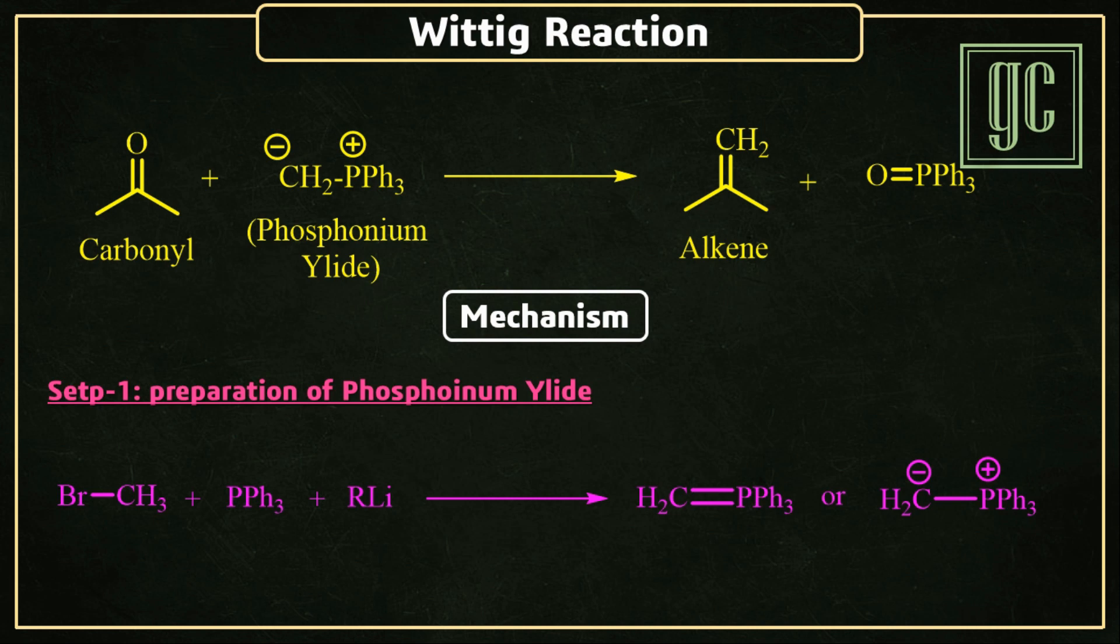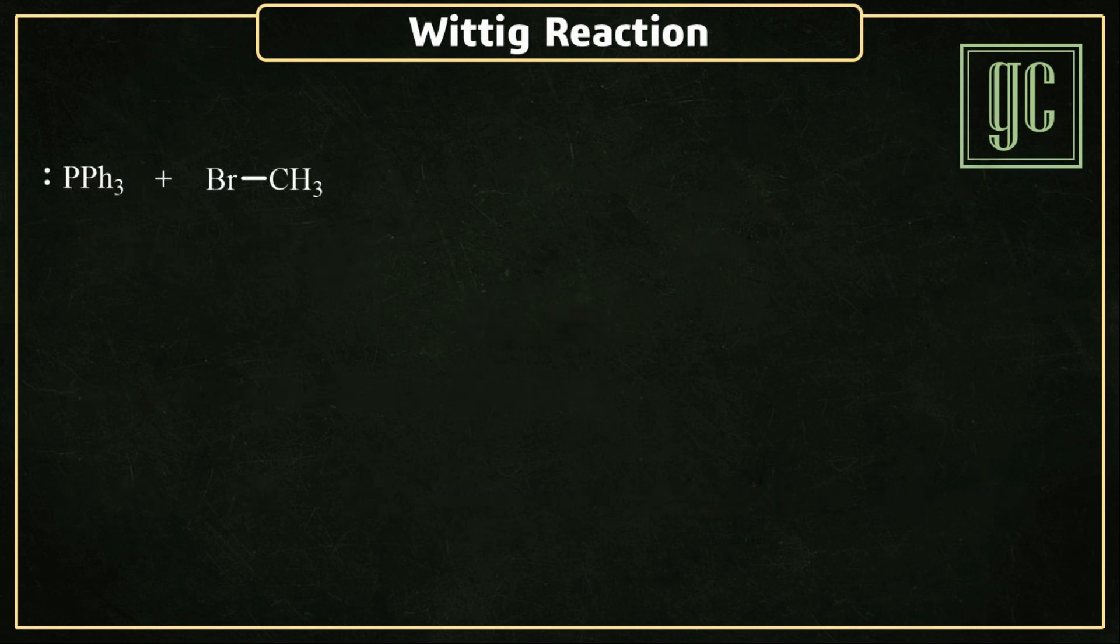For the preparation of ylide, haloalkane, phosphine, and alkyl lithium are used. The free lone pair of triphenylphosphine attacks on the alkyl halide and substitutes the halo group. A positive charge species is obtained.